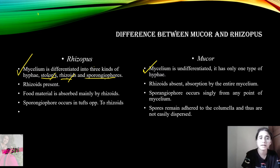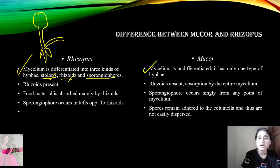We can see that this is our sporangium, and this is the sporangiophore. The sporangiophore will grow straight, and the other hyphae will be present alongside it.